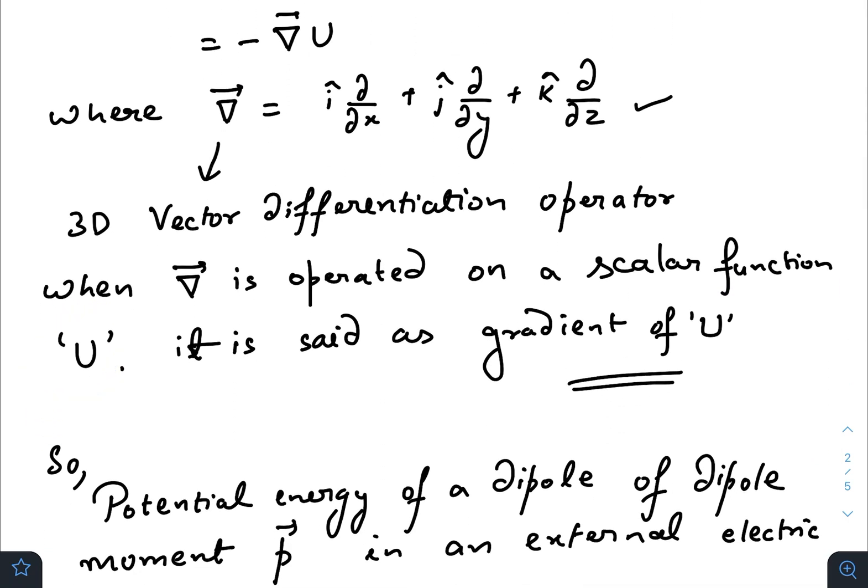The terminology we use is gradient of u. If you do a dot product with a vector quantity you call it divergence, and when you do a cross product with a vector you call it the curl. But those things are not in our syllabus so I won't go there further.